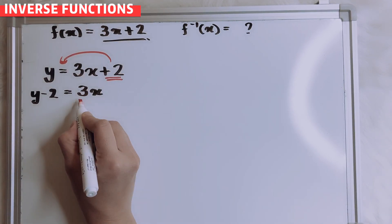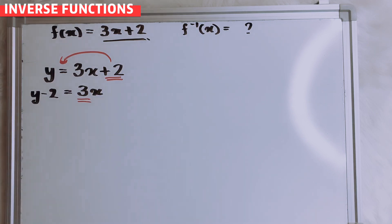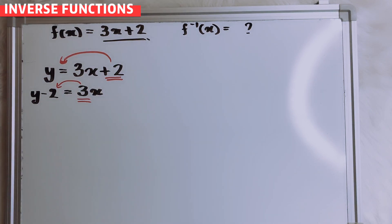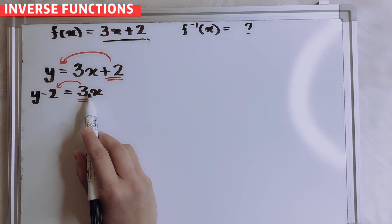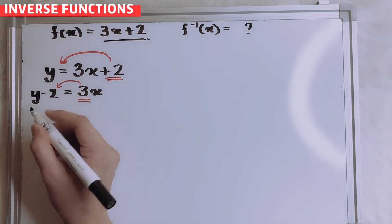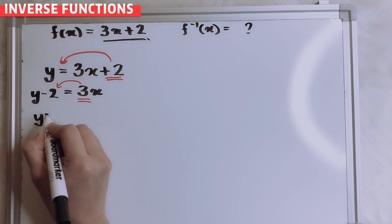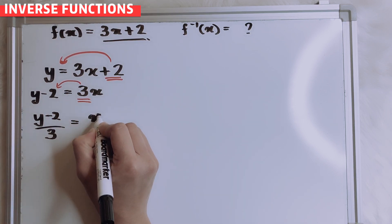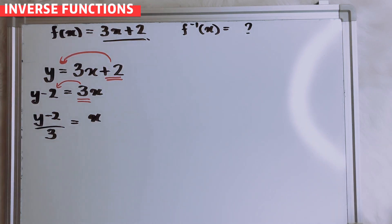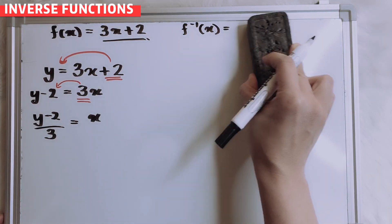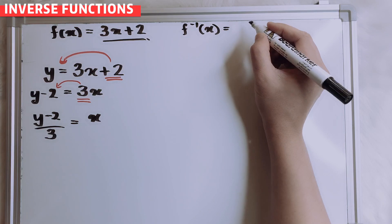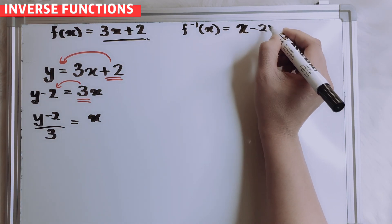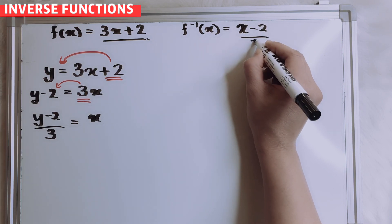So last, I want to move number 3 to this side. So this is multiply, so once you transfer to this side, it will be divide. So your f inverse will be x minus 2 over 3.